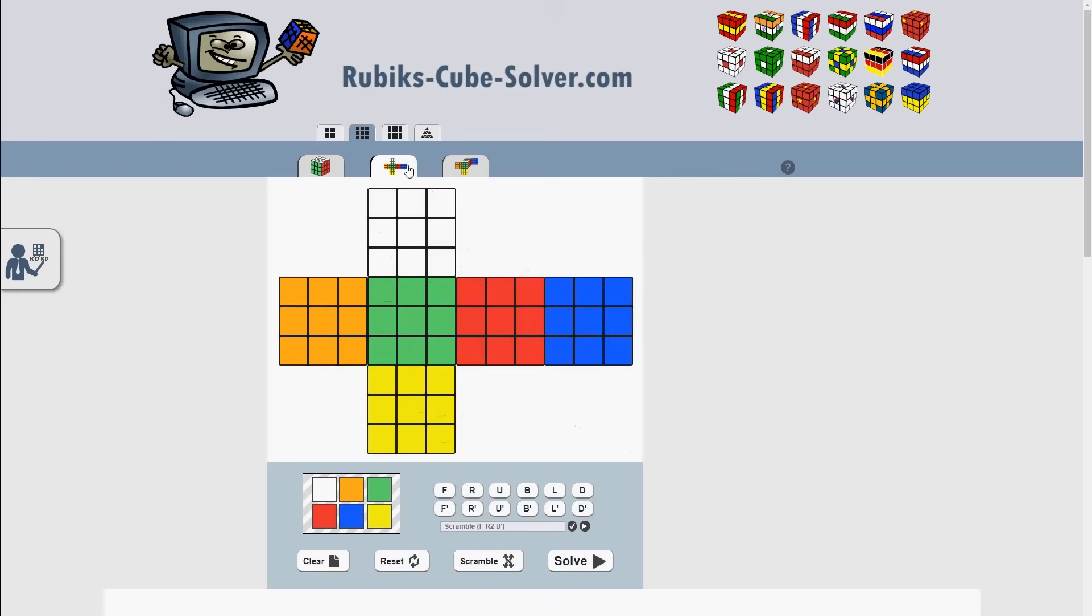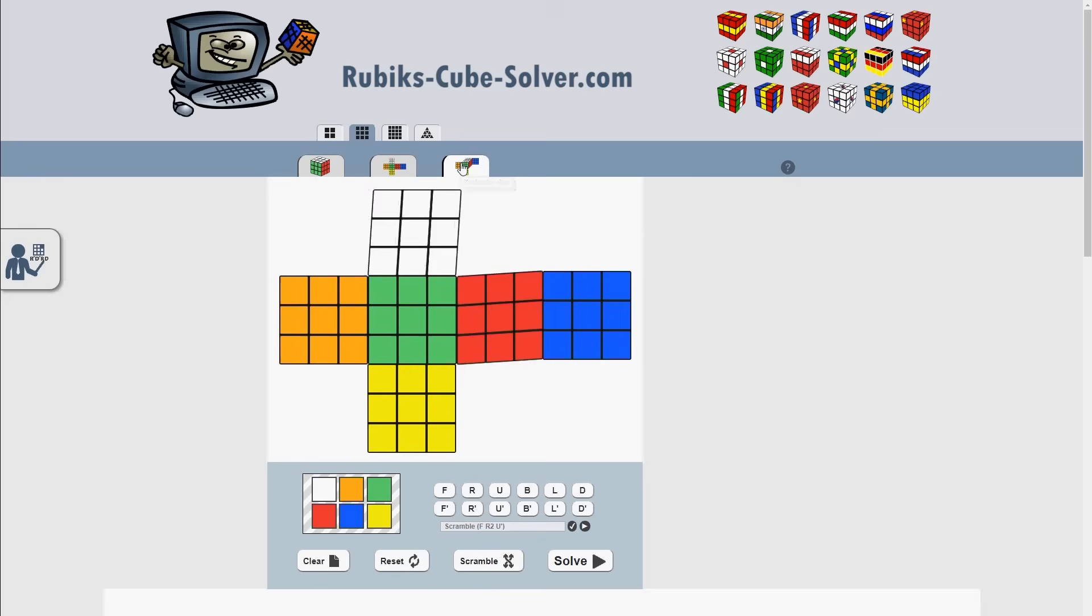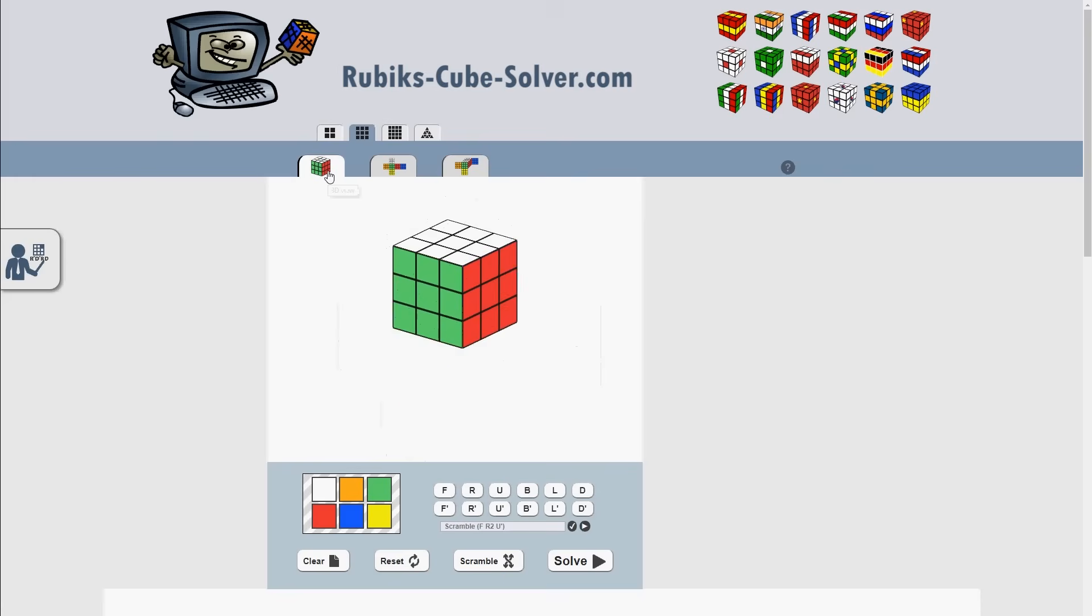Pick a cube view to set up your scramble. Beside the default 3D view, there are two unfolded options.